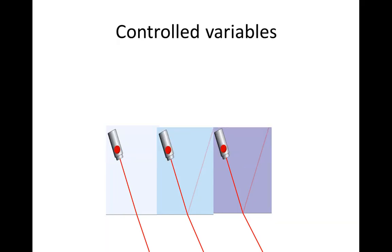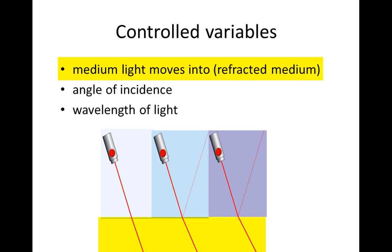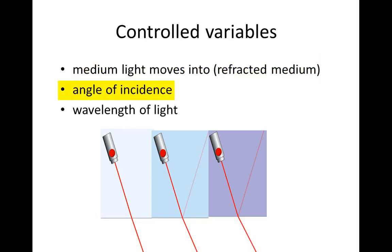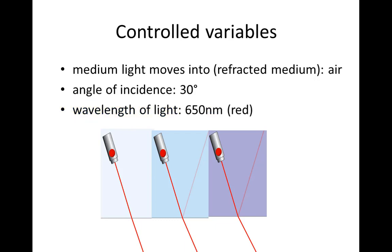But what must be kept the same between our treatments to make this test fair? We need to control the medium that the light moves into — we could call it the refracted medium. We must also have a constant angle of incidence and a constant wavelength of light.